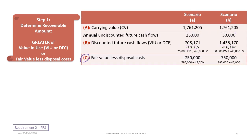Next, we will include our fair value less cost to dispose, or less disposal costs. From the data, we're told the fair value is $795,000, but the cost to dispose is $45,000. So that gives us a net fair value less disposal costs of $750,000, and that is the same under both scenarios.